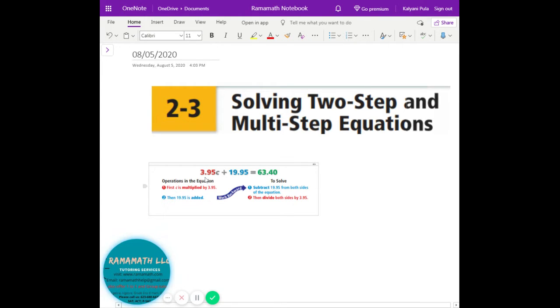Like for example 3.9c plus 19.95 equals 63.40. So there are multiple things you have. So in this one first of all, please keep an eye on here.